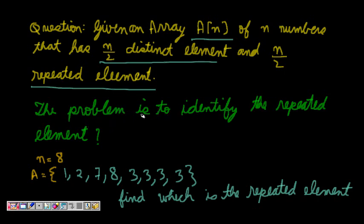We can solve it linearly — we can go through a loop and compare whether numbers are getting repeated. Let's see an example first. n is equal to 8 and we're given the array 1, 2, 7, 8, 3, 3, 3, 3. So 4 numbers, n/2 numbers, are repeated. We have to find that number 3 is repeated.